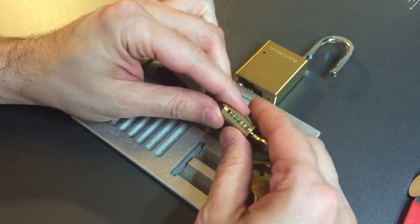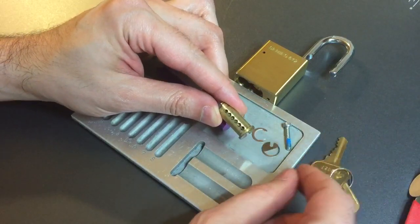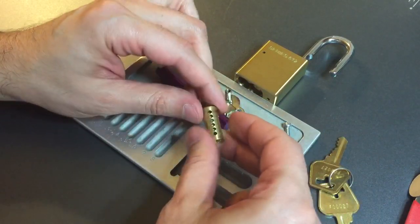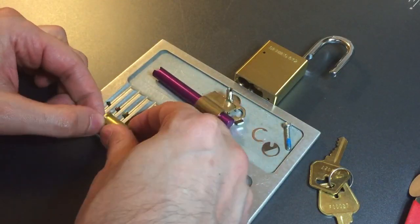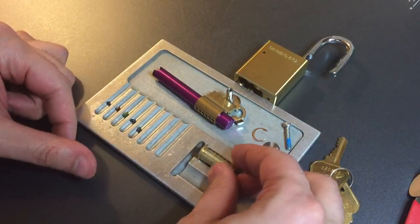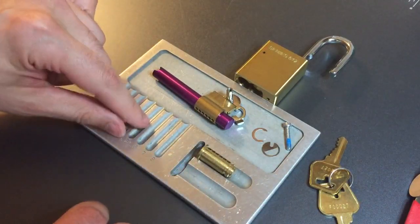Right away we can see that this is a six pin lock that's only been keyed up in the first five cylinders. Let's dump these key pins out. And these are all serrated pins. Let me arrange these a little better.